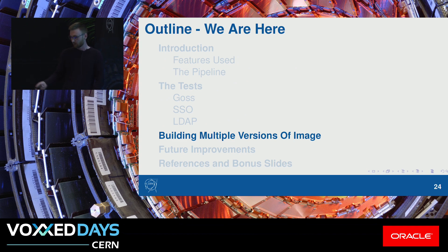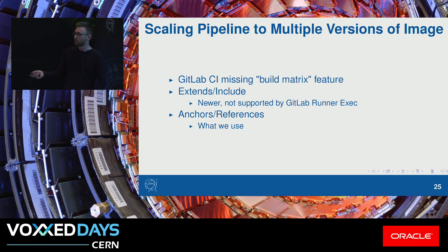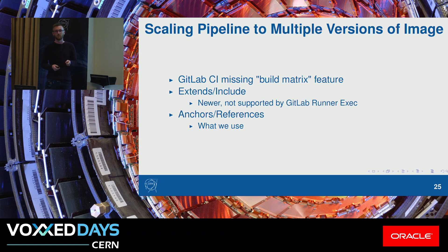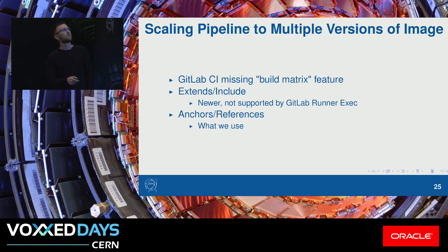Next I want to show you how you can use GitLab CI to build multiple images. You might think you could just copy-paste all the code and change the versions, but that would be horrible code duplication. So you want to somehow template. In GitLab CI, you are limited to extends and include, or anchors and references. GitLab CI does not have a build matrix like Travis does, so you have to emulate it yourself using these features. Extends and include is newer and nicer, but it's not supported by the GitLab runner exec command that I really like, so we use anchors and references.